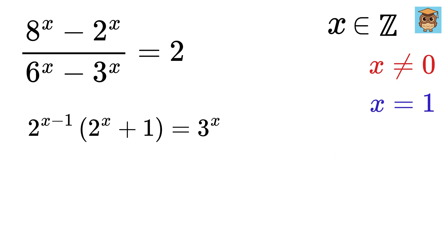Now, we will look for all integer x less than 0. For that, let x equals negative n and let n be greater than or equal to 1. So this equation will become 2 to the minus n minus 1 times 2 to the minus n plus 1 equals 3 to the minus n.